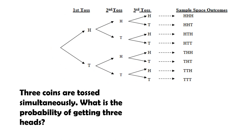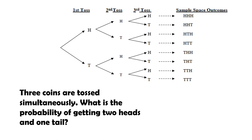3 coins are tossed simultaneously. What is the probability of getting 3 heads? There is only 1 outcome with 3 heads, so the answer is 1 over 8. What is the probability of getting 2 heads and 1 tail? There are 3 such outcomes — HHT, HTH, and THH — so the answer is 3 over 8.